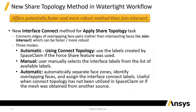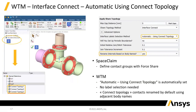There's a new shared topology method that will connect edges of overlapping face pairs rather than doing a join intercept like it does now. It's faster and allows you to address cases that maybe you couldn't before. If you're in SpaceClaim, you can go in and when you do the share, you can create contact groups and connect topology, or you can do it directly with this new shared topology.